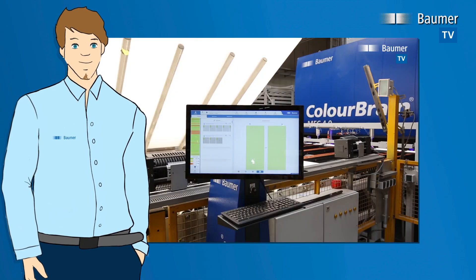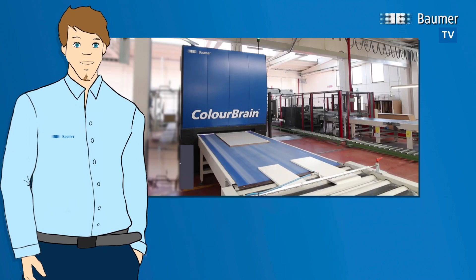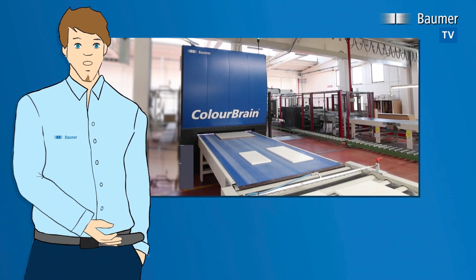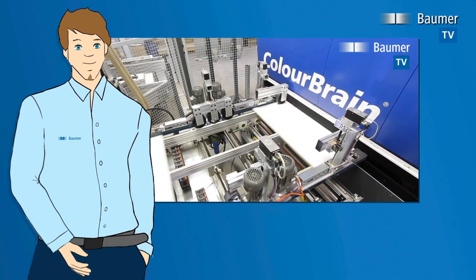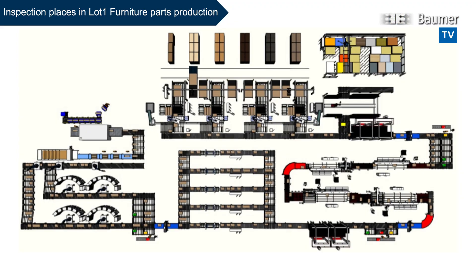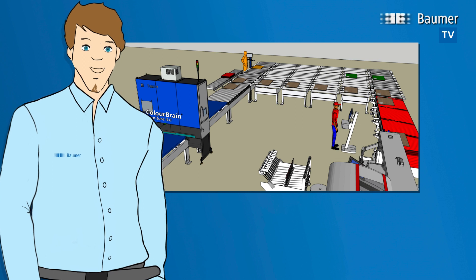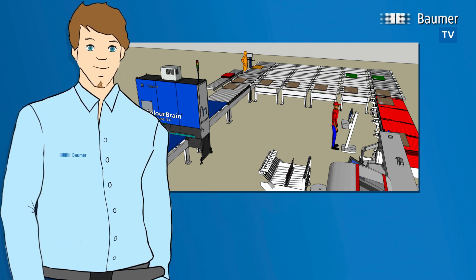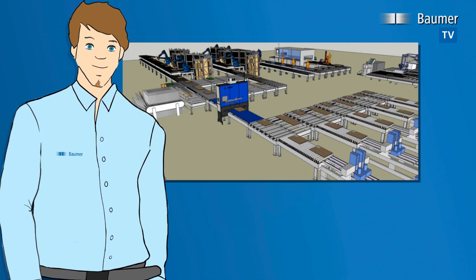Other typical applications for Baumer systems are lines for decorating panels and extruded goods, from coated, lacquered or sheathed large panels to edged and drilled furniture parts. In the Lot 1 production process, there are several sensible places of application for the Furniture 4.0 system: first, after the panel partition; second, after edge processing; and third, after drilling.